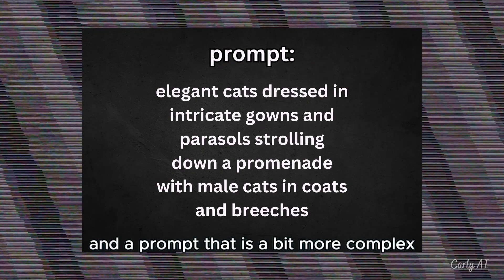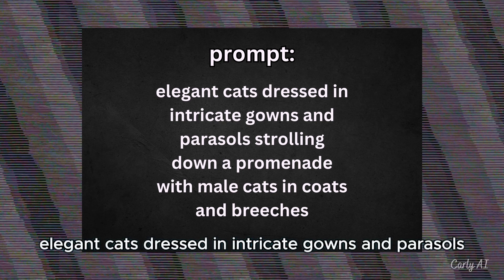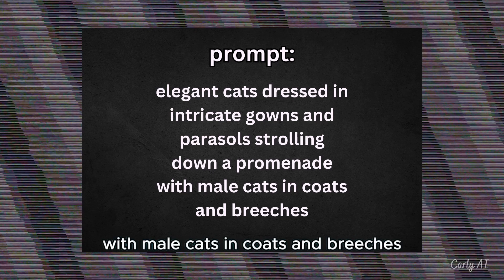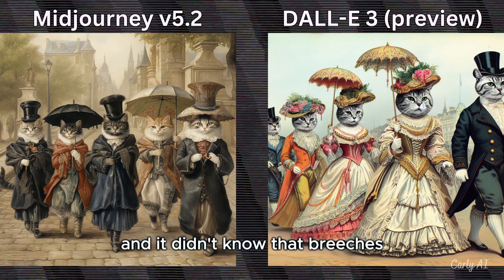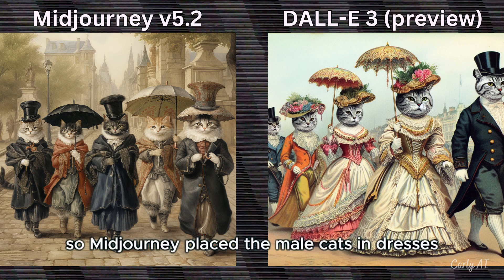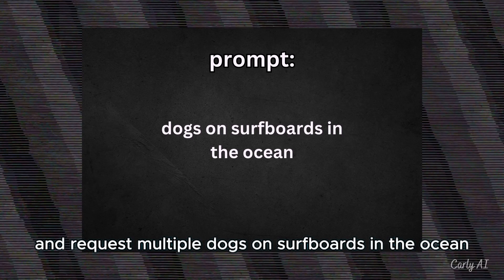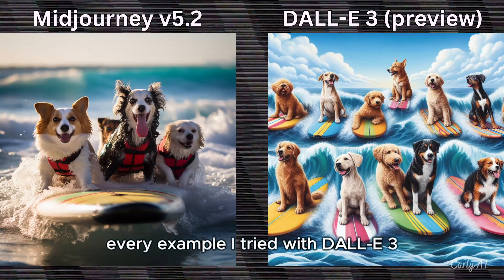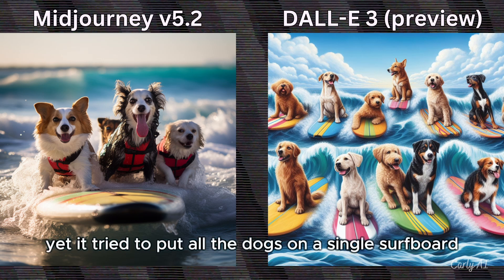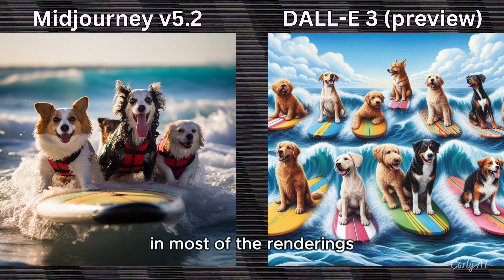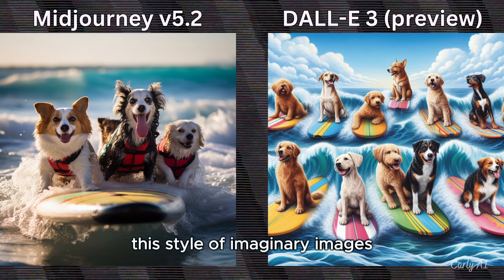Now we go for imaginary art and a prompt that is a bit more complex. We have this prompt: elegant cats dressed in intricate gowns and parasols, strolling down a promenade, with male cats in coats and breeches. DALL-E 3 was right on target with this prompt as well. Midjourney was just okay, and it didn't know that breeches are similar to trousers, so Midjourney placed the male cats in dresses. For our last example, we stay with animals and request multiple dogs on surfboards in the ocean. Every example I tried with DALL-E 3 for the dogs was on target with the prompt, and I chose the best to show. Midjourney was compliant by creating multiple dogs, yet it tried to put all the dogs on a single surfboard in most of the renderings. As we saw in the prior cat promenade example, DALL-E 3 is superior when it comes to rendering this style of imaginary images.